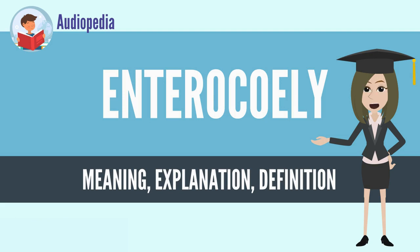Enterocelous development is the stage of embryological development of deuterostomes in which the coelom forms. The stage starts with the gastrula, as the archenteron forms. Pockets of migrating cells also form, creating another layer between the endoderm and ectoderm — the mesoderm. These pockets gradually expand to form the coelom.